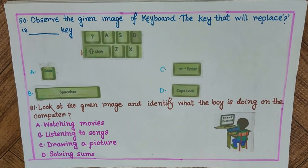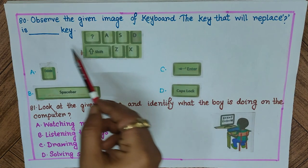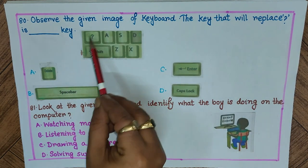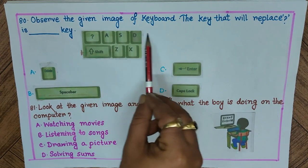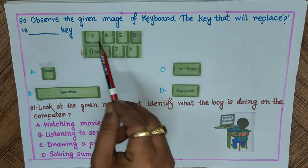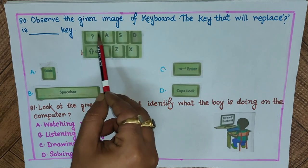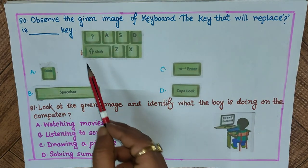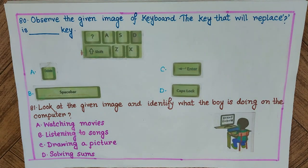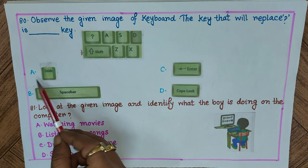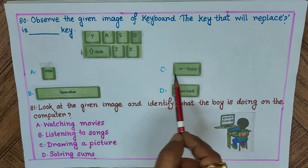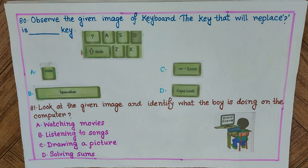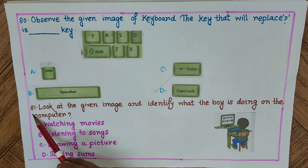Question 80: Observe the given image of a keyboard. The key that replaces the question mark beside the A key on a standard keyboard is — A) delete, B) spacebar, C) enter, D) caps lock. On a normal keyboard, caps lock is in the position next to A. The answer is D) caps lock.